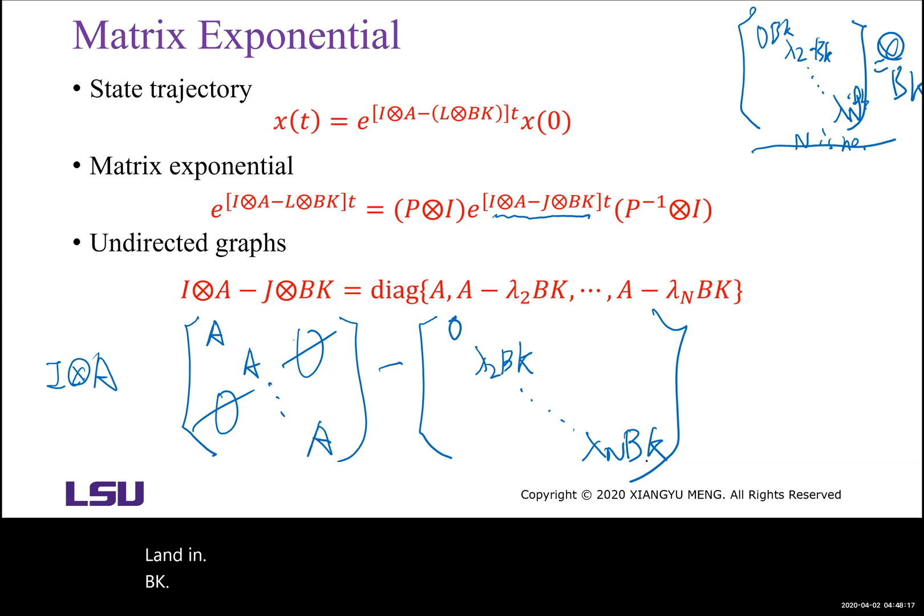So in the middle, it's a diagonal matrix. It will be A, A minus lambda 2 BK, until A minus lambda N BK. So in our next lecture, we will discuss how to design the controller gain K to make all agents reach consensus.